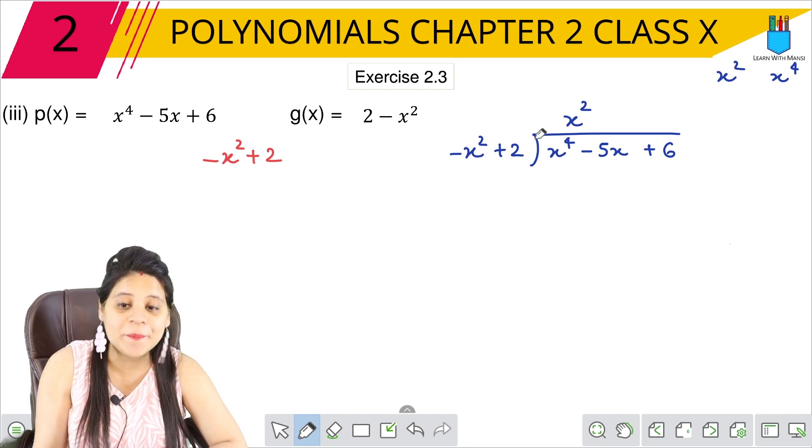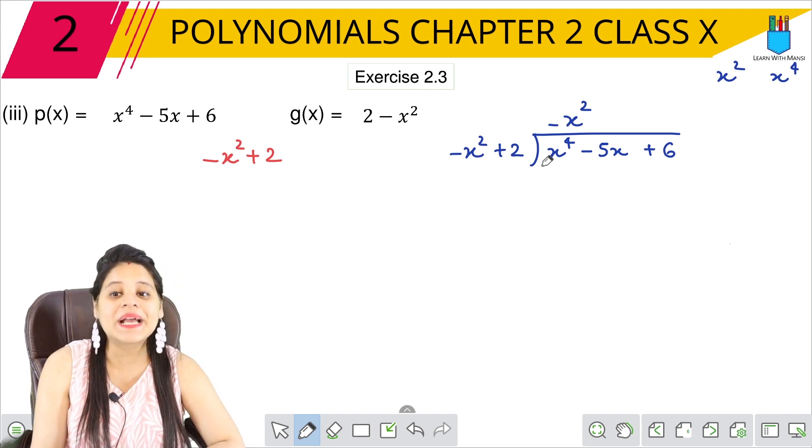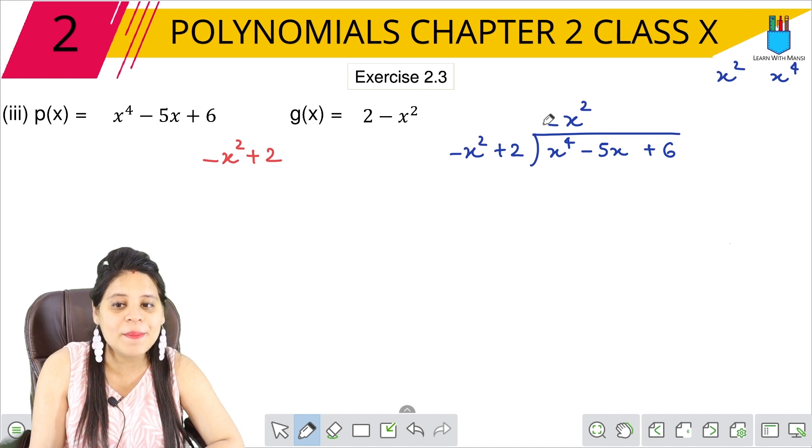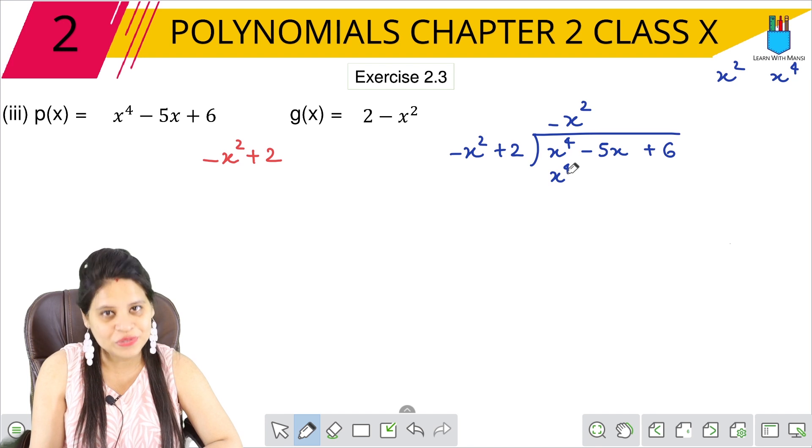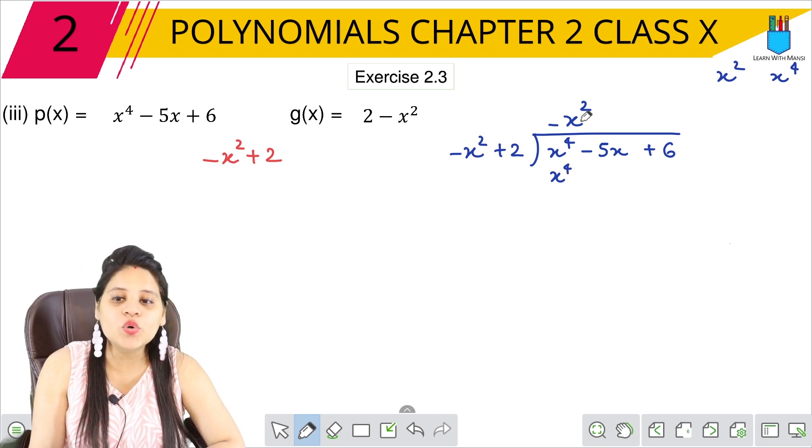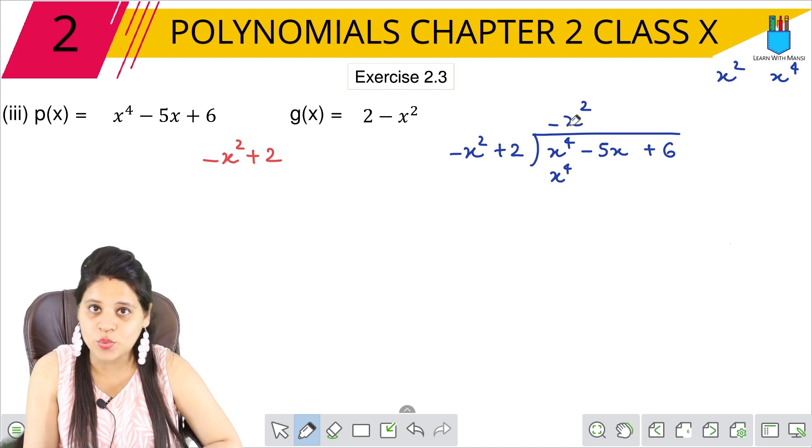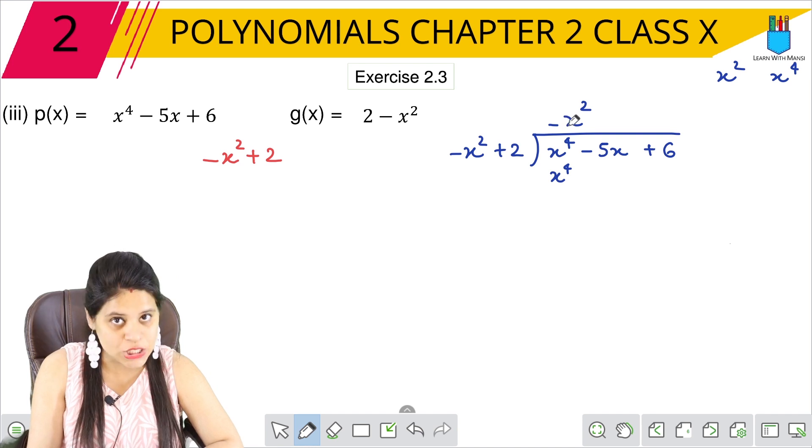So what will happen? Minus minus plus: x square into x square will be x raised to the power of 4. Okay? Now, if we do this, 2 into x square—2x square means minus 2x square.